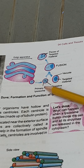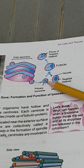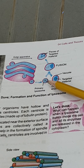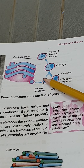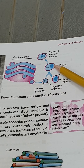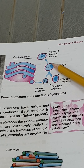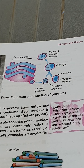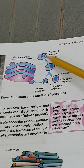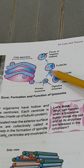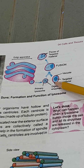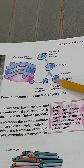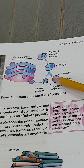Lysosomes are also known as suicide bags because they pour all their enzymes onto the targeted material and destroy its structure. They then fuse with the plasma membrane and the material is expelled out. They essentially destroy themselves in the detoxification process, which is why these structures are also known as suicide bags.